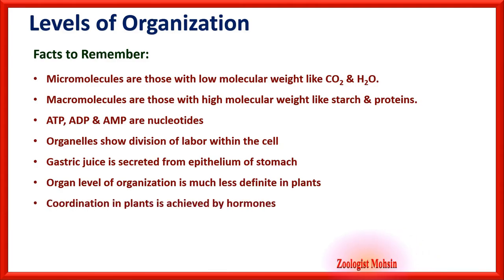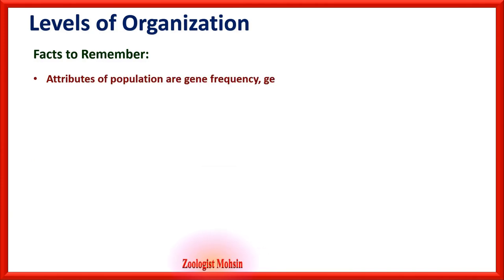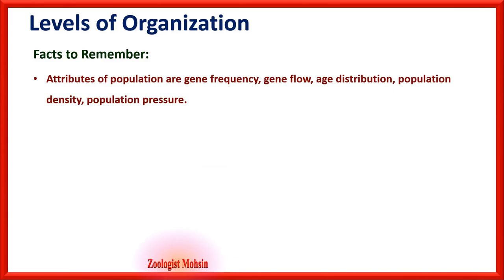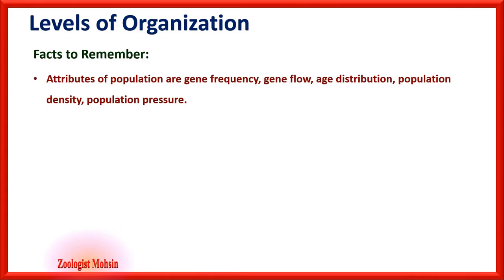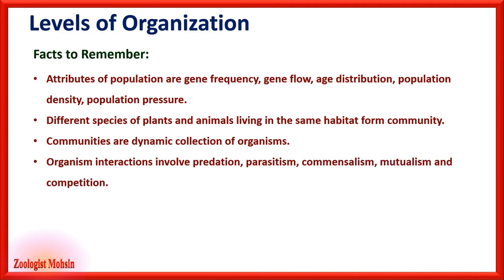Coordination in plants is achieved by hormones, not neurons. A population is defined as a number of living organisms of the same species located in the same place at the same time. Population attributes include gene frequency, gene flow, distribution, population density, and population pressure. A community is different species of plants and animals living in the same habitat. Organism interactions include predation, parasitism, commensalism, mutualism, and competition.